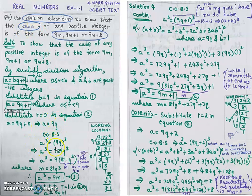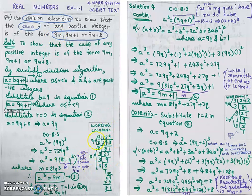Now I need to simplify (9q)³. We know 9 × 9 = 81 and 81 × 9 = 729, so a³ = 729q³. My goal is to express this as 9m, so I need to take 9 as a common factor.